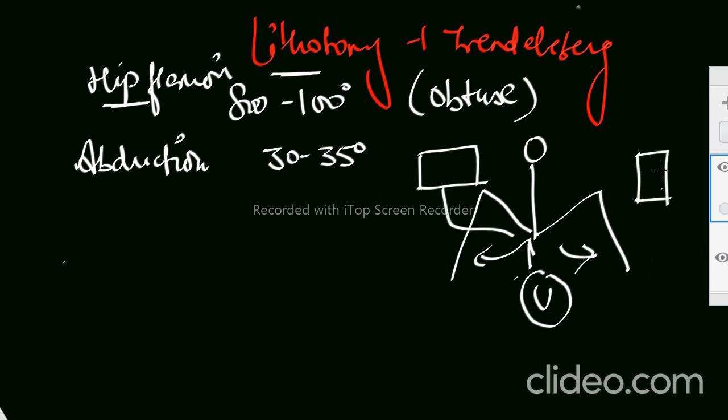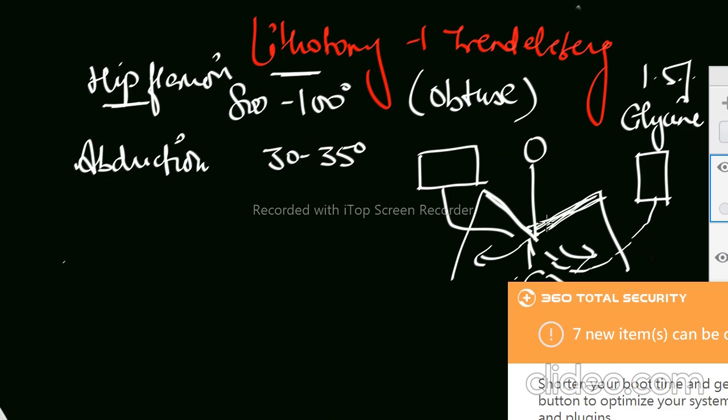There will be one monitor connected to it and there will be one irrigation fluid, for example let's say 1.5% glycine. The urologist will be using irrigation fluid on this. So what happens actually? The lithotomy position has some complications because you can see this position, and we know that this position can cause peripheral nerve injuries, very common. Can you answer any three nerves that can be damaged during this position?